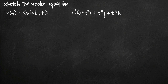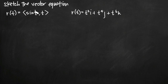Today we're going to be talking about how to sketch a vector equation. In this particular video we're going to be dealing with two different vector functions. One is r of t, and keep in mind that for both of these, r is the vector and t is the parameter — a vector function for r in terms of the parameter t. So we have r of t equal to the components sine t and t, and then we have a second equation we'll get to in a moment.